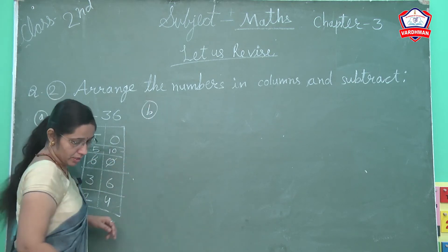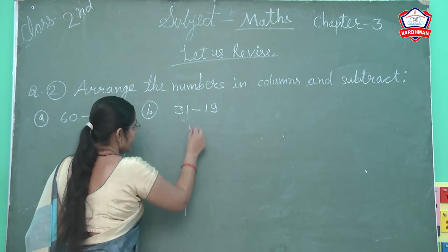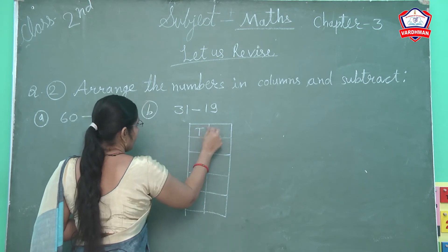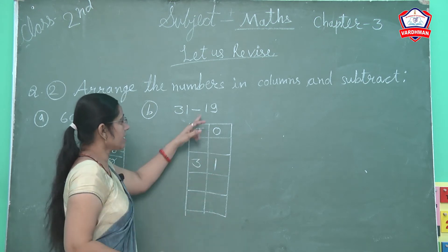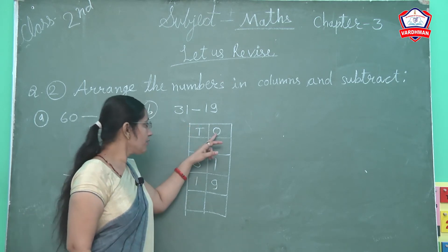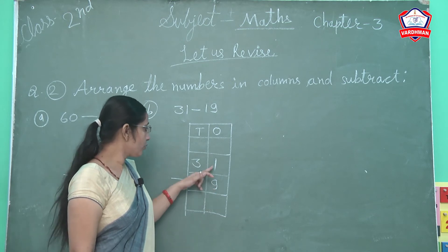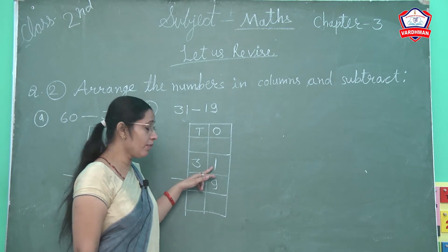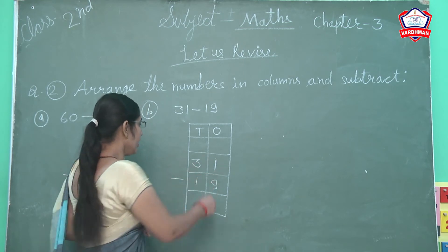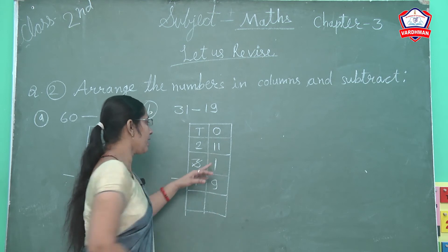Next, question number b. Question number b is 31 minus 19. Arranging in column. First digit is 31, next down is 19. Write minus symbol here. Let's start. Ones column — the first digit is 1. 1 mein se less kitne karna hai? 9. So 1 mein se 9 less hote hai kya? Nahi hote, kyunki 1 hai woh small digit hai aur 9 hai woh biggest hai. So 1 mein se 9 less nahi honge. 3 se borrow lenge. 3 cut hoke 2 ho jayega, kyunki 1 forward ho jayega ones column mein. Forward hoke 1 ke paas 1 lag gaya, toh kya banega? 11.